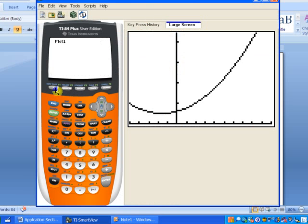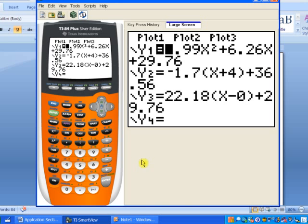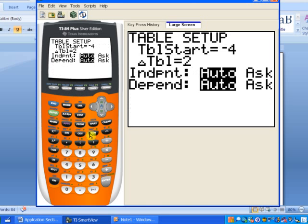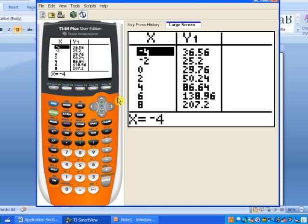We'll take our calculator, and notice I've gone ahead and put the model that we have in list number 1. Now if we go to table set, we can start at negative 4 and go in increments of 2. And there's our table.